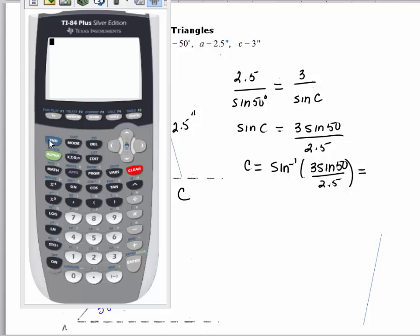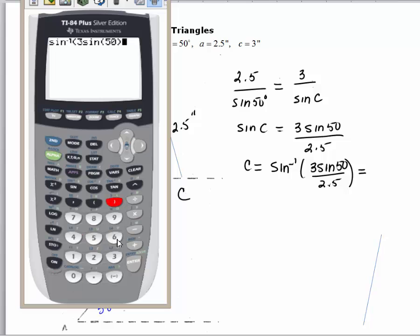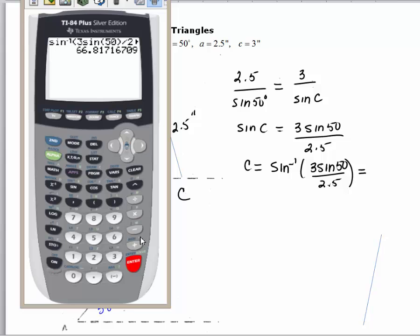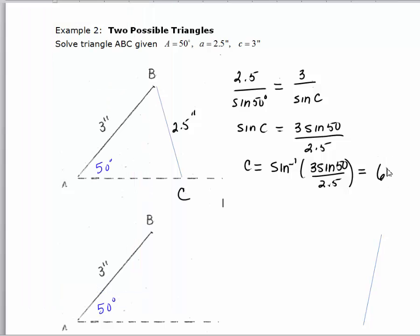From our calculator, we hit 2nd sine of 3 sine 50 divided by 2.5, close the parentheses, and our calculator gives us 66.8. Rounding angle C to the nearest whole number gives us approximately 67 degrees. So we've got angle C, and we can find angle B by subtracting these two angles from 180. So B equals 63 degrees.